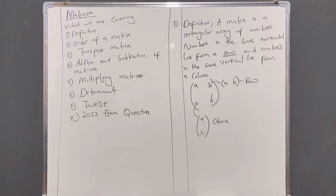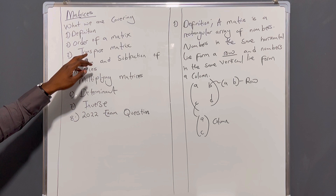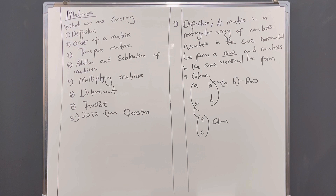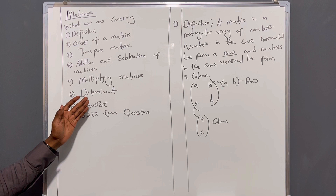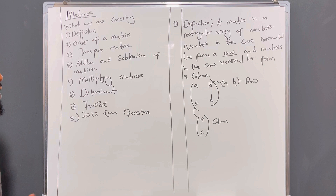In this particular topic we are going to cover eight things. Number one: the definition of a matrix. Two: the order of the matrix. Three: the transpose matrix. Four: how to add and subtract matrices. Five: how to multiply matrices. Six: the determinant. Seven: the inverse. And eight: we will end with the 2022 internal exam question paper two, to show you how to answer an exam question.